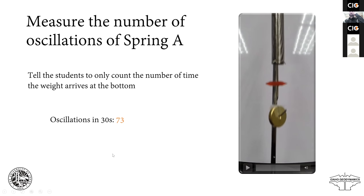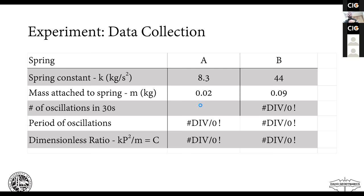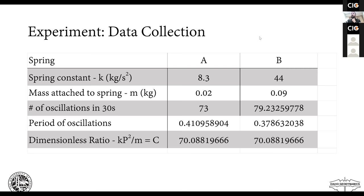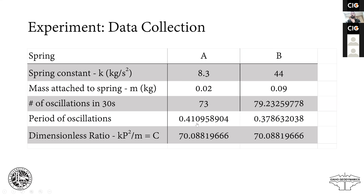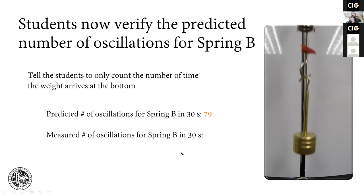If we put 73 into the data sheet, we get a period of oscillations of 0.4 seconds and a dimensionless ratio equal to 70. The students would calculate this dimensionless ratio and then calculate backwards to get the number of oscillations they would expect in 30 seconds for spring B. Once they have that, they should get about 79 oscillations. They can then do the experiment for spring B with 90 grams of weight — a different spring and a different mass — and we've predicted the number of oscillations.